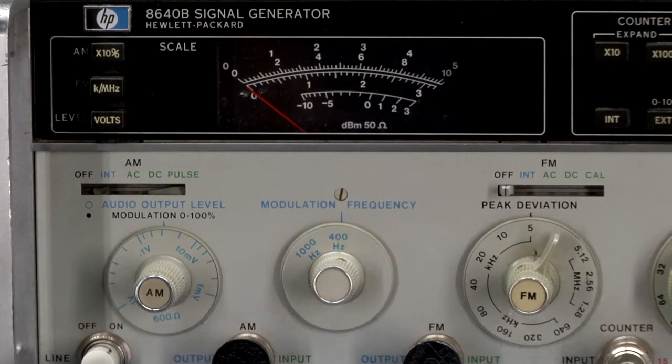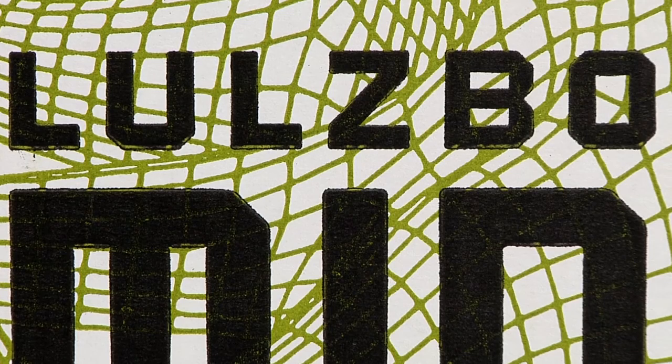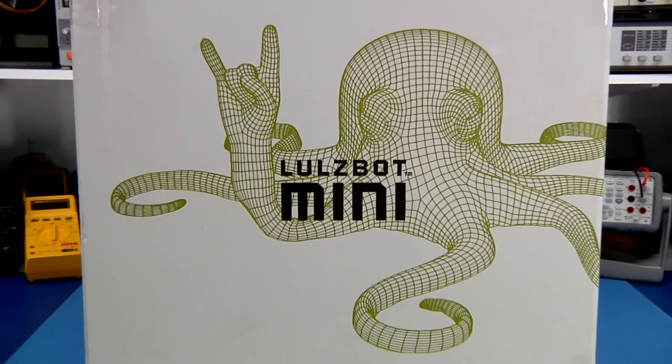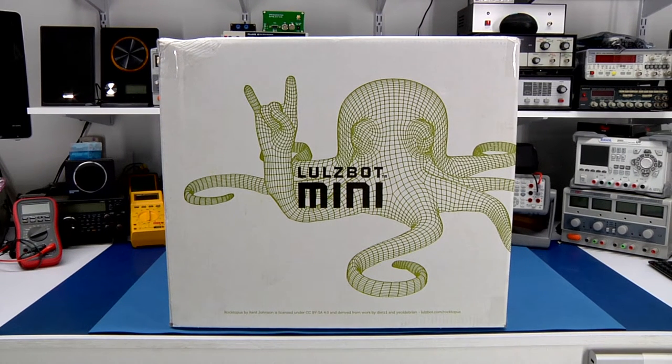So I started looking into getting a printer over the last couple of weeks. After doing some reading online and viewing some of the video reviews, I settled on a printer in my price range that had the features I was looking for. I should mention that I'm a complete new person in this area, so I have a lot to learn, but that's of course one thing that I really like about this hobby. Here's my new 3D printer. It's the Lulzbot Mini from Aleph Objects Incorporated, and they are out of Loveland, Colorado, USA.